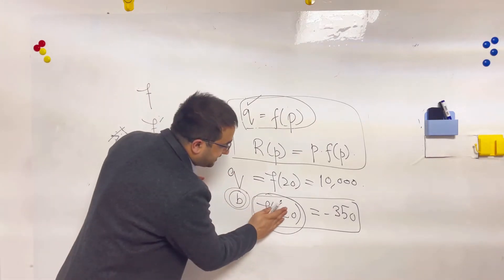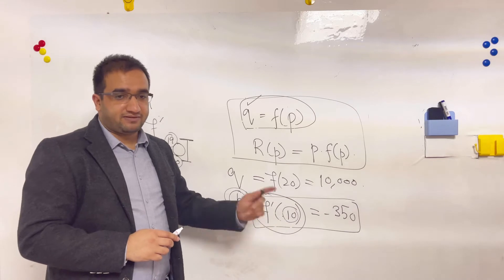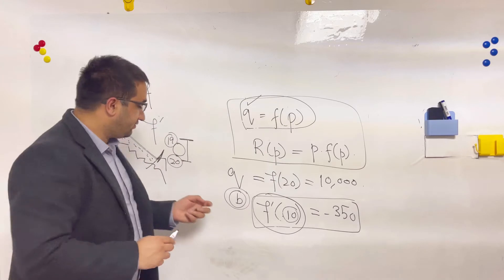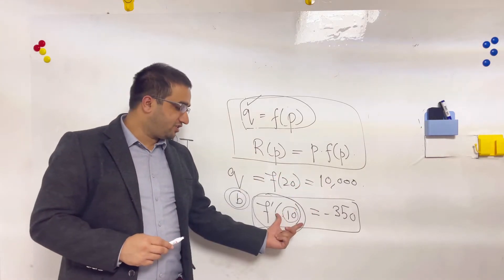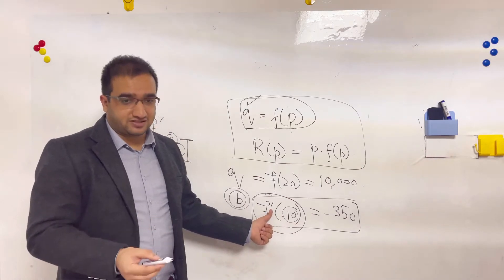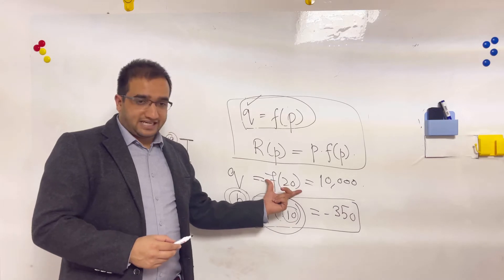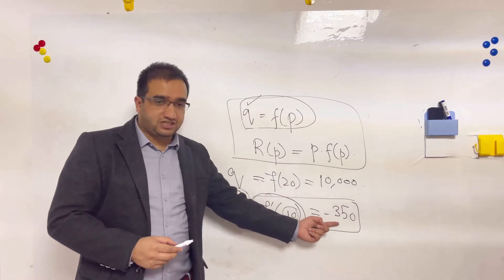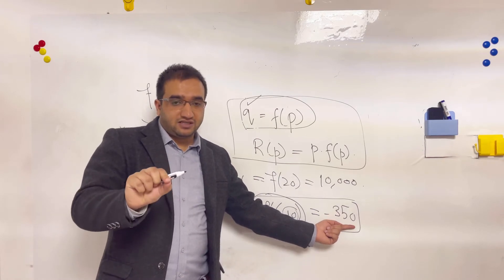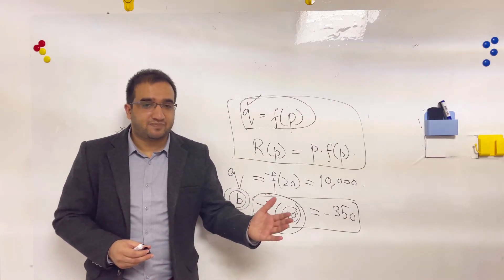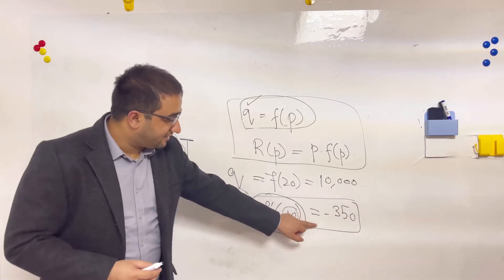The derivative tells us what difference comes in total production when you increase the price by just one unit — from 19 to 20, or from 9 to 10. It gives the change in quantity for a one-unit change in price. Without the derivative, we have the total production; with the derivative, we talk about the change in production caused by changing the price one unit.